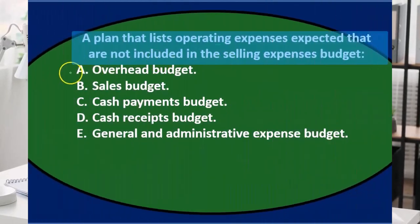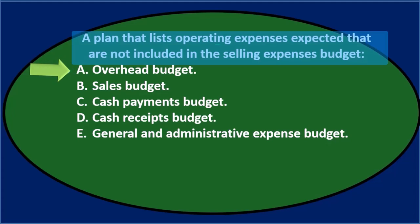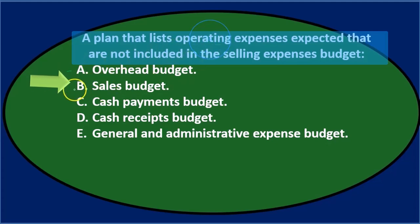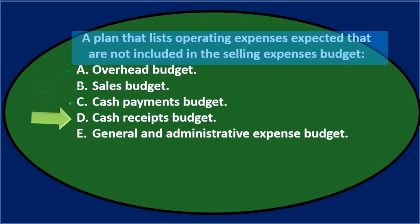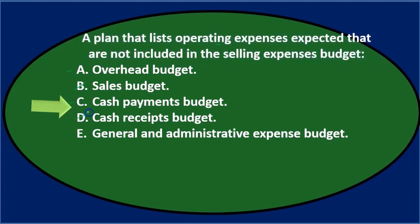We're talking about operating expenses. A says overhead budget — that usually goes into cost of goods sold, not operating expenses. B says sales budget, and we're talking about operating expenses, so I don't think it's going to be B. C says cash payments budget — you might have payments in there. And D says cash receipts budget — this is expenses, so we're probably not talking about money coming in.